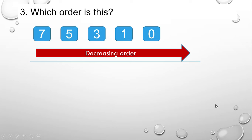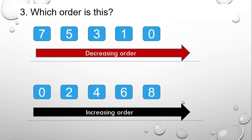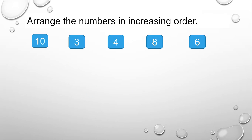What about this? You can see that this is decreasing order because we are moving from 7, going to 5, 3, 1, and 0. Then for this we move from 0, 2, 4, 6, and 8, so this is going to be increasing order.